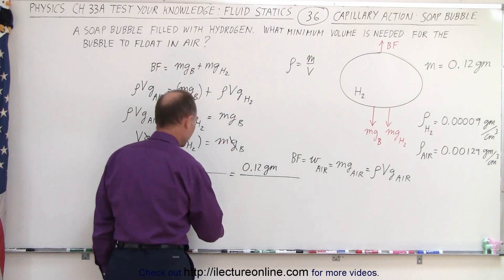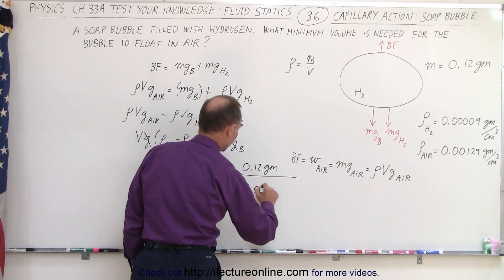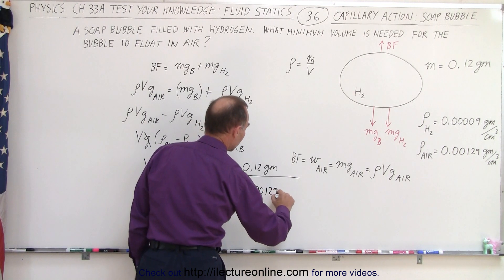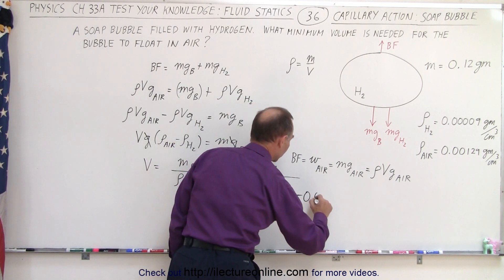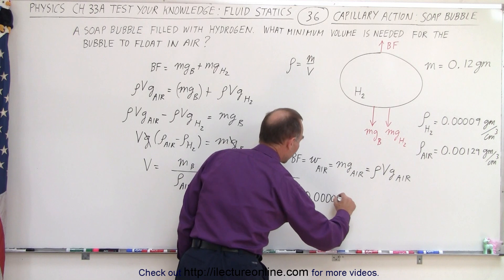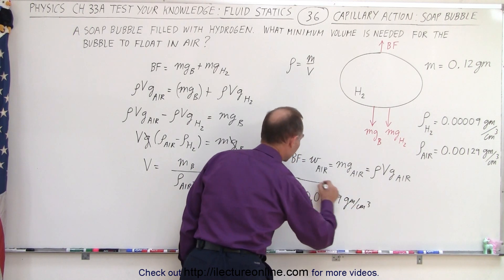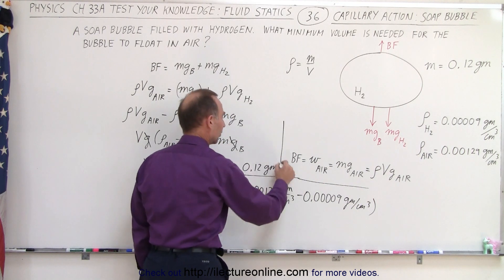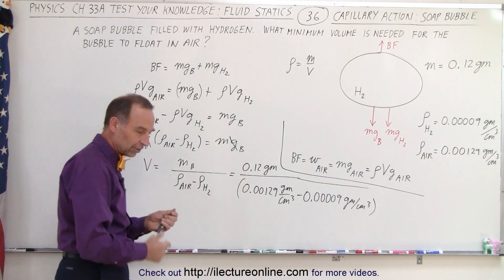And divide that by the density of the air, which is 0.00129 grams per cubic centimeter, minus 0.00009 grams per cubic centimeter. You can then clearly see that the result is going to be in terms of cubic centimeters.